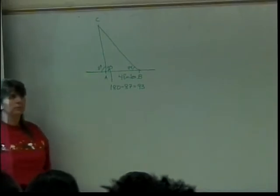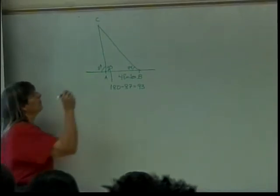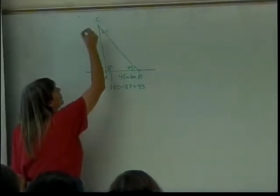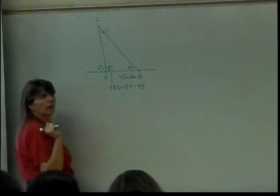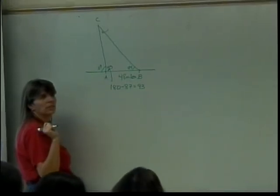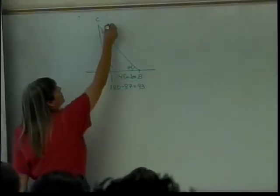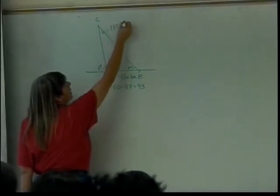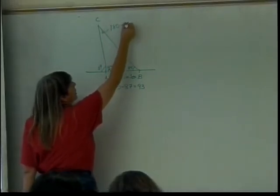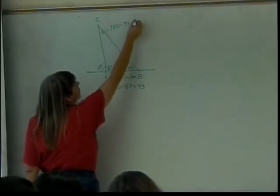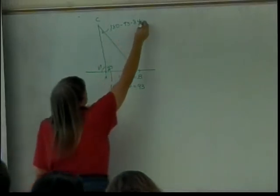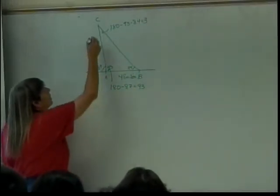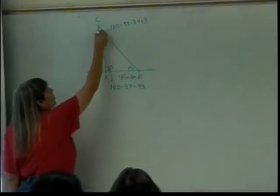And then up here — they all add up to 180, so I have 180 minus 93 minus 84, and that turns out to be 3. So this angle is 3 degrees.